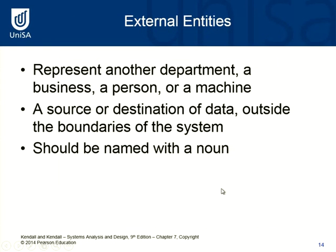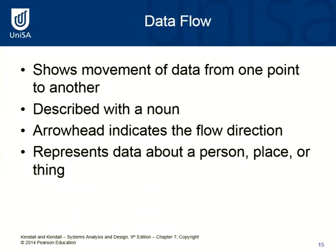External entities represent another department, a business, a person, or a machine — the source or destination of data entering or leaving the system. They're outside the boundary of the system and should be named with a noun. Data flows show the movement of data from one point to another, whether going into or leaving a source. Data flows are described with a noun, need an arrowhead showing the direction of flow, and represent data about a person, place, or thing.